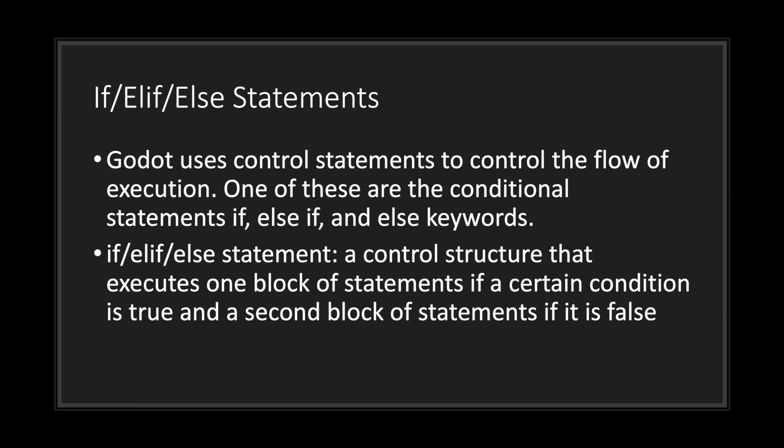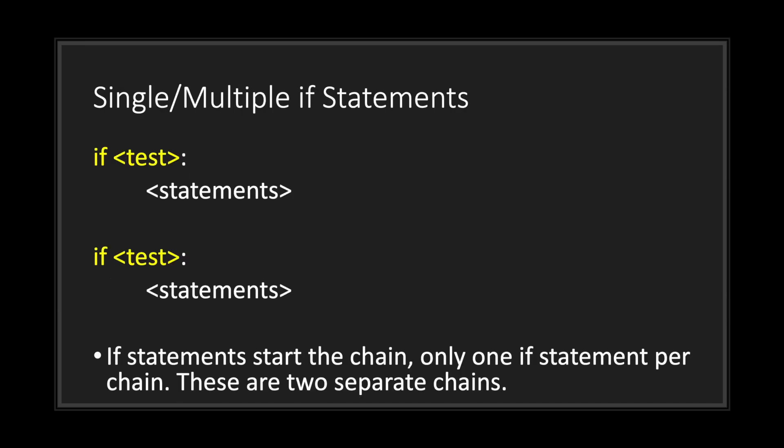Let's take a look at the if statement chain. An if statement chain is a control structure that executes one block of statements if a certain condition is true, and a second block of statements if it is false. The if statement starts the if-else statement chain, and only one if statement is allowed to be used per chain.